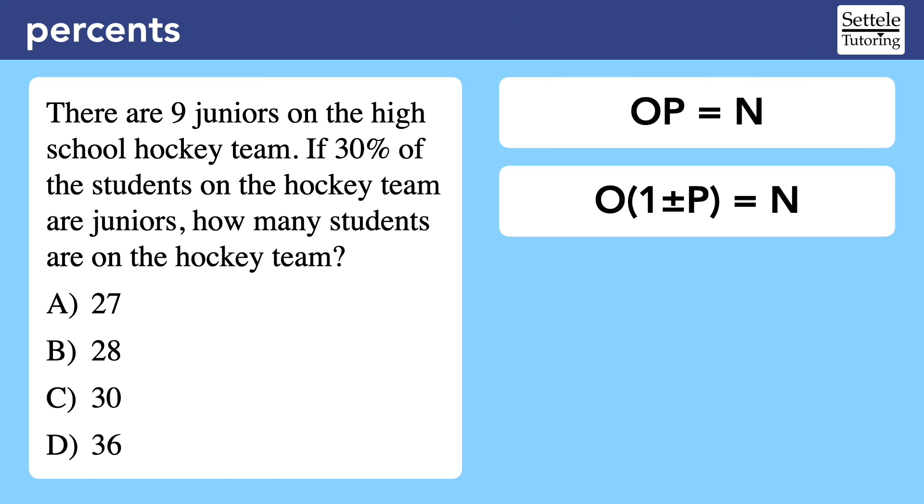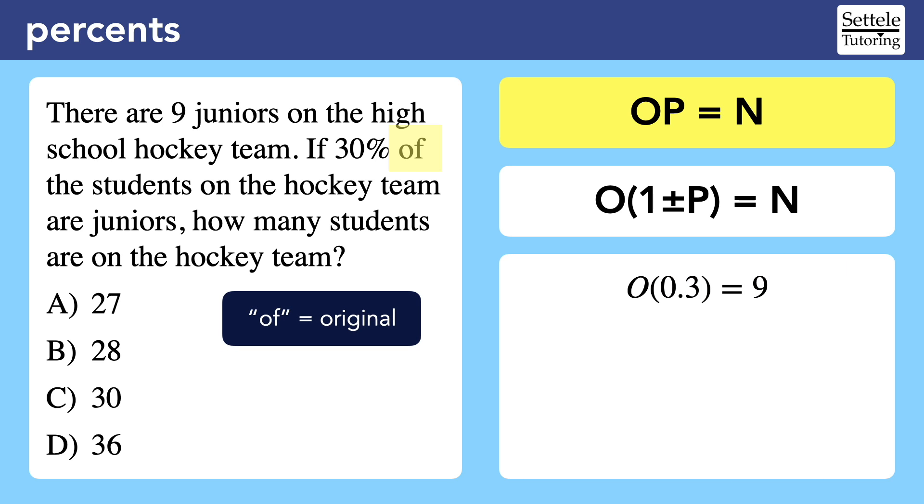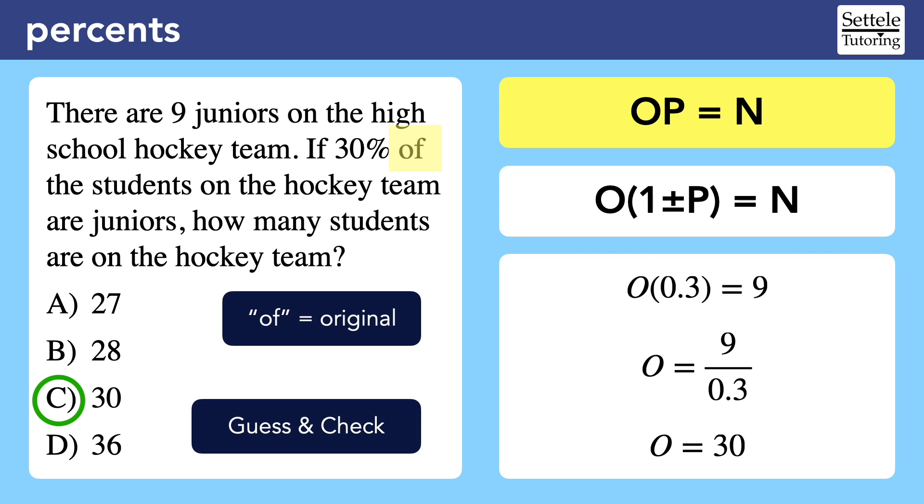Here's another example. There are nine juniors on the high school hockey team. If 30% of the students on the hockey team are juniors, how many students are on the hockey team? This time we'll use the basic OP formula because the question just wants 30% of the hockey team. Just like the word than in the last question, the word of points us toward the original value, which is the full hockey team in this case. We can substitute and solve to find that there are 30 people on the team. You might be thinking that these questions would be easier if we wanted to guess and check, and I agree. Many percentage questions are good opportunities for guess and check because they'll let us take a percentage using multiplication, which is what our brain really wants to do. But if the SAT removes the answer choices, we'll need the formulas.